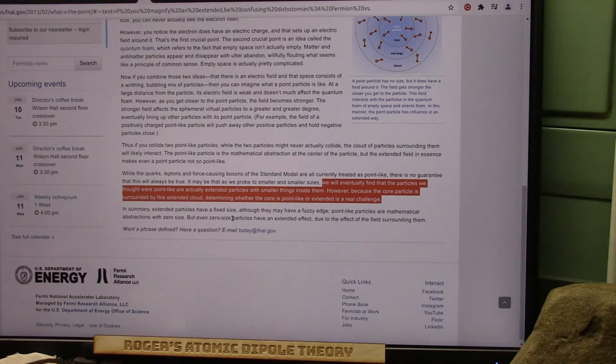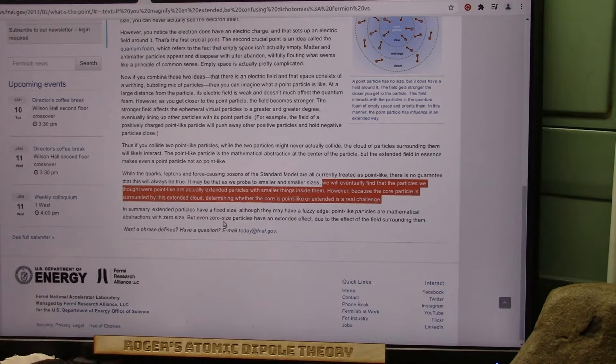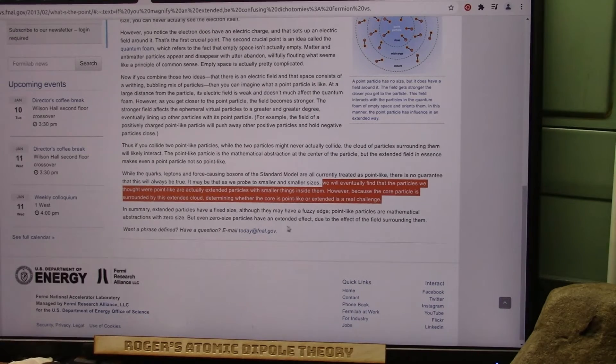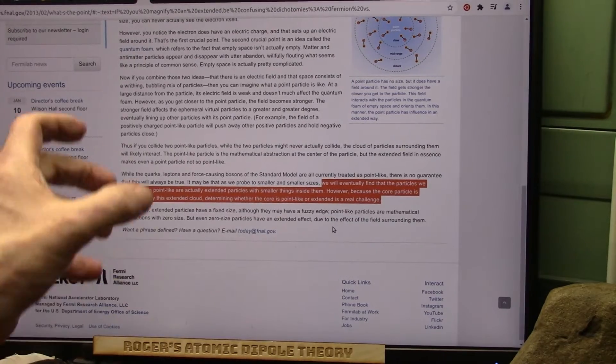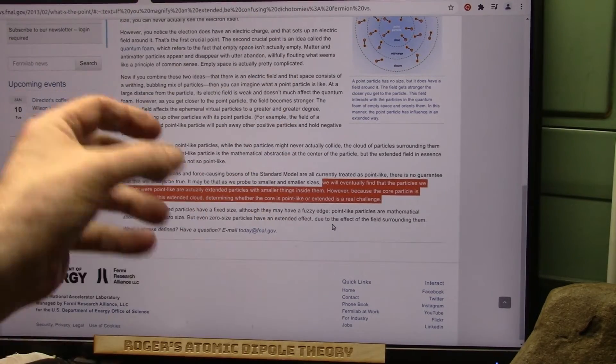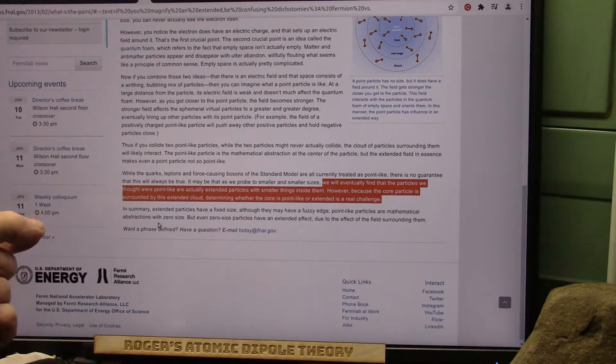There must be something there. But he says, even with zero-size particles, they have an extended effect due to the field that surrounds them. So, if something surrounds something, there's something in the middle, so it can't be zero, but it's very small.